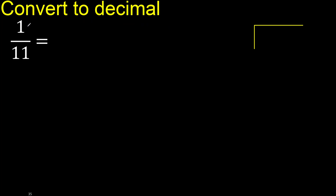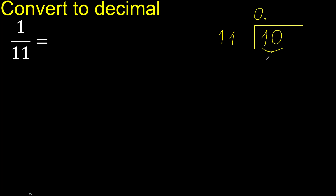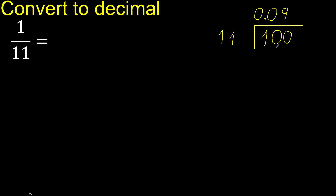1 divided by 11. 1 is less than 11, so complete with 0 — 0 point. 10 is also less, so complete with 0 again — 0.0. 100 is not less. 11 multiply by which number is nearest to 100 but not greater? 11 multiply by 9 is 99. 100 minus 99 is 1. Next, there is no number, so complete with 0.